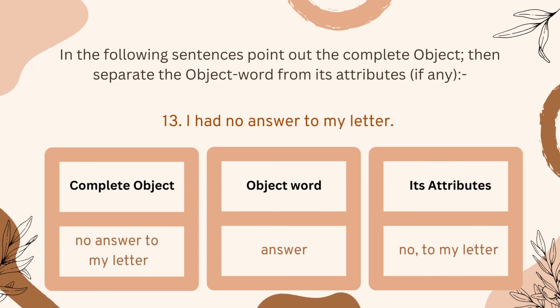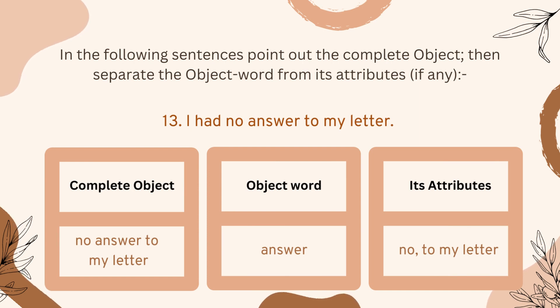Number thirteen: 'I had no answer to my letter.' 'No answer to my letter' is the complete object. 'Answer' is the object word, and 'no,' 'to my letter' are the attributes.